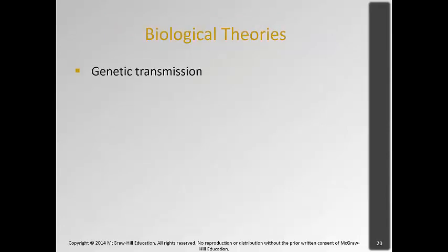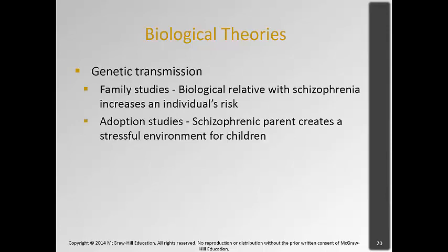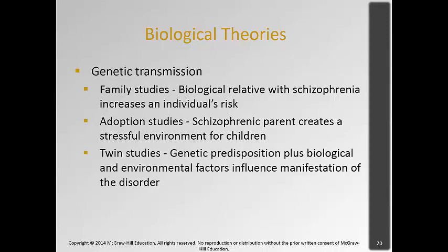In terms of biological theories, some people think there is a genetic transmission, and there is evidence to suggest that schizophrenia runs in families. A biological relative with schizophrenia increases someone's risk. Adoption studies found that kids adopted and raised by parents without schizophrenia still develop the disorder, but at lower rates. Parents with schizophrenia may create a more stressful environment for the child, and through the stress-vulnerability model, even a genetic vulnerability may lead to expression of the disorder.